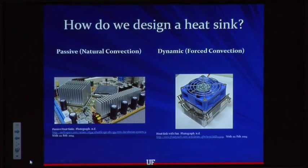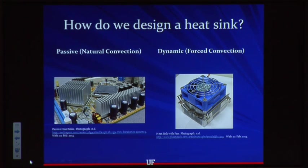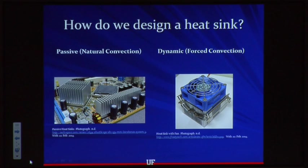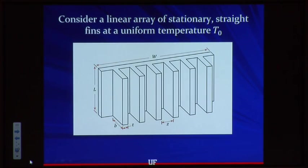There are a couple primary types of heat sinks. The first is a passive type, in which you have very large fins and use natural convection and radiation to get rid of excess heat. There's also dynamic or forced convection types, where you have a coupled system of heat sink fins and a fan that forces air over the fins to take away the heat being conducted from the microprocessor. That's what we're going to focus on, as it's most prevalent in personal computing applications.